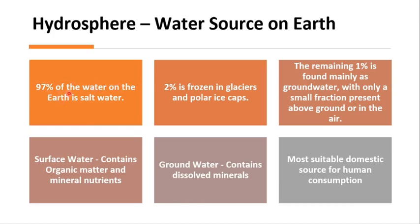97% of the water on earth is salt water. 2% is frozen in glaciers and polar ice caps. Remaining 1% is found mainly as groundwater with only a small fraction present above the ground or in the air. Surface water contains organic water and mineral nutrients dissolved in it. Ground water also contains dissolved minerals, and the most suitable domestic source for human consumption is fresh water.